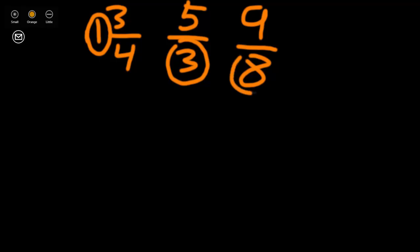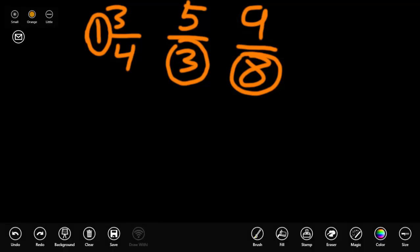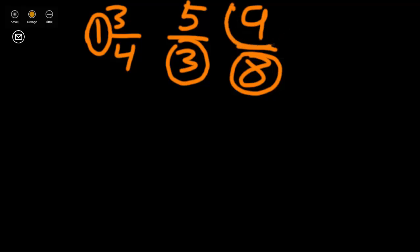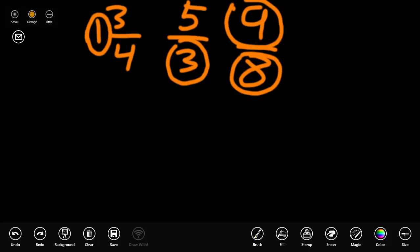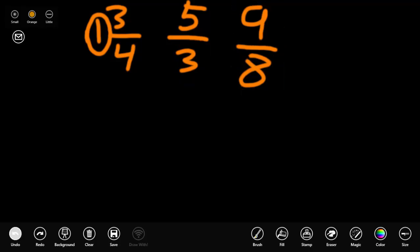Now let's look at these 3 fractions. To compare them more easily, let's change them all to mixed numbers. 1 and 3/4ths is already a mixed number.